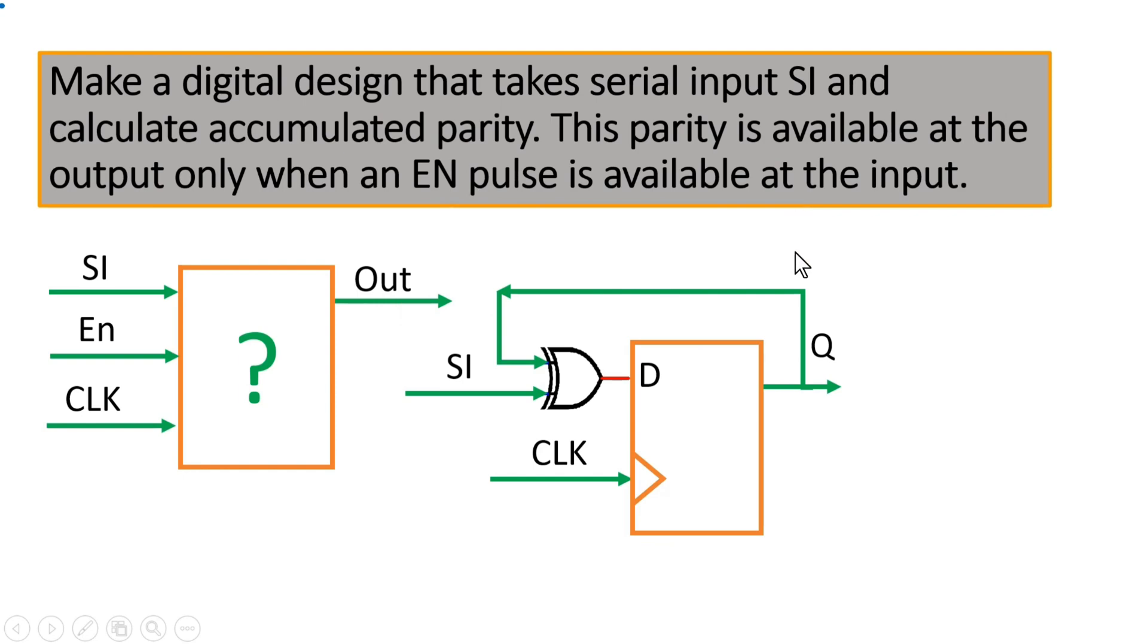So that means we need to prepare a circuit which is after this. I want to say that whenever there is any enable pulse, then this Q should be passed to D. If it is passed to D, obviously it will be passed to out. So we need to find out the logic circuit diagram here in this question mark.